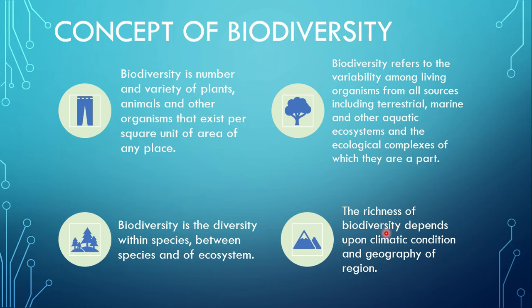Because of this difference in climatic condition there can be different varieties of plants, animals, and other biological components. Similarly, according to geographical structure and land structure, there can also be differences in biodiversity. The Himalayan region has rocky and steep land whereas the Tarai region has very plain land, because of which the plants, animals, and other biological components found there can be different.